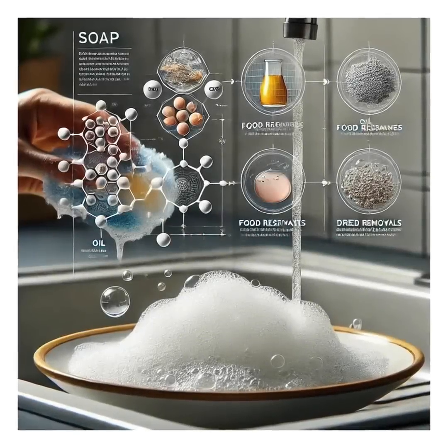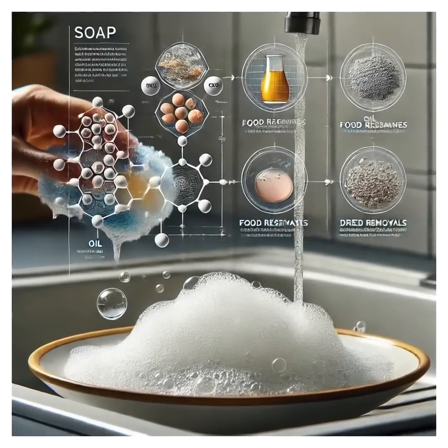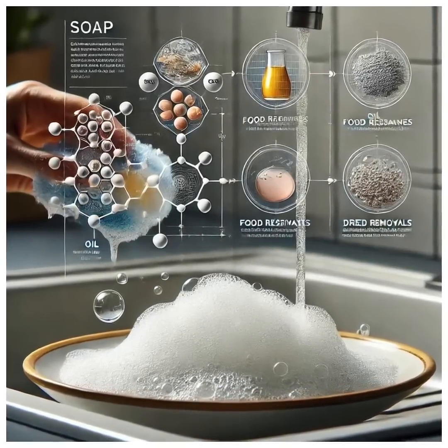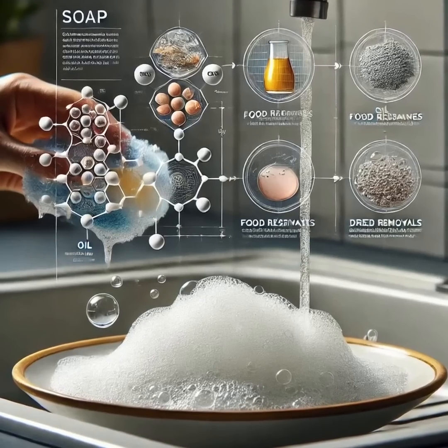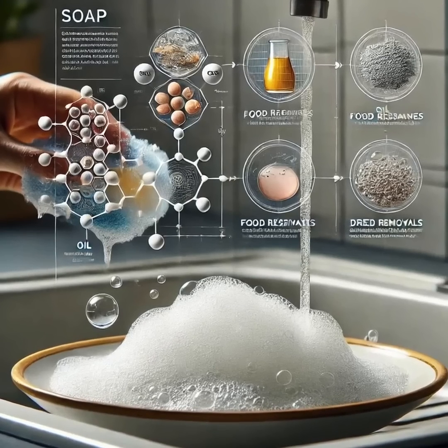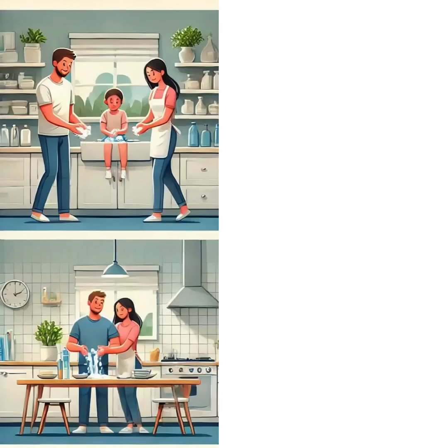Here, we're using a simple experiment to show how soap reduces surface tension. Watch as the soap spreads out and creates a layer that breaks the surface tension of the water, making it easier for the soap to interact with oils and dirt.